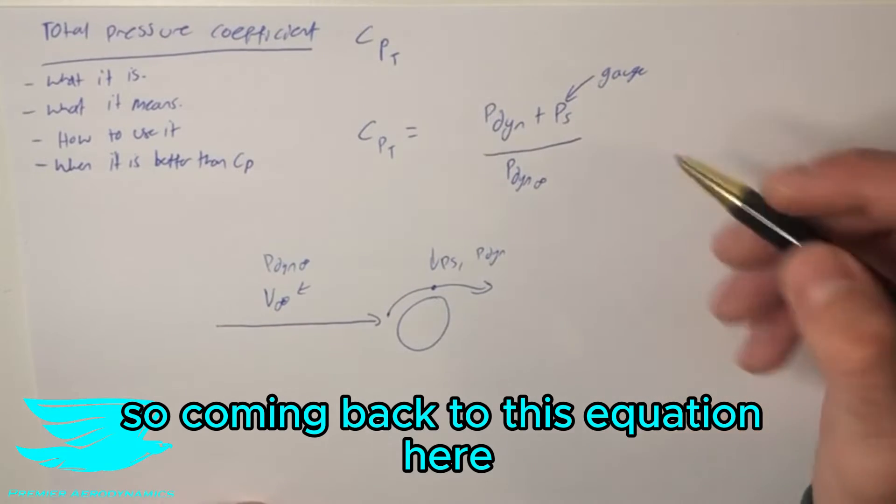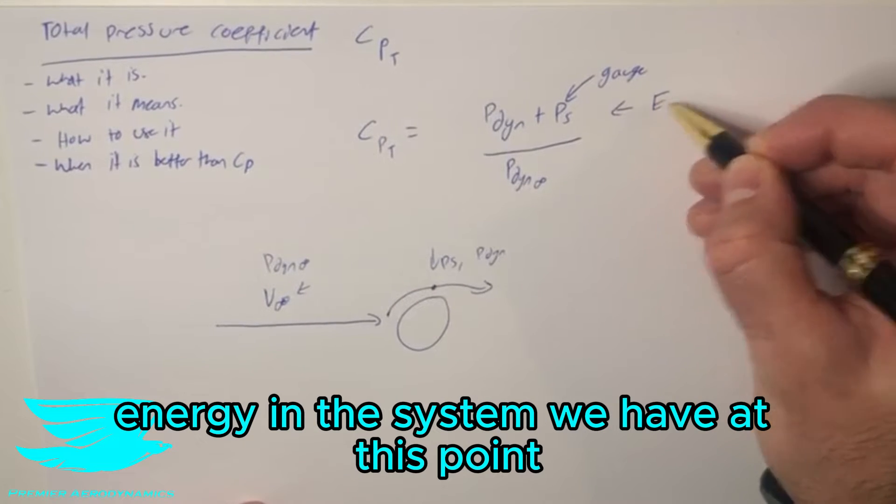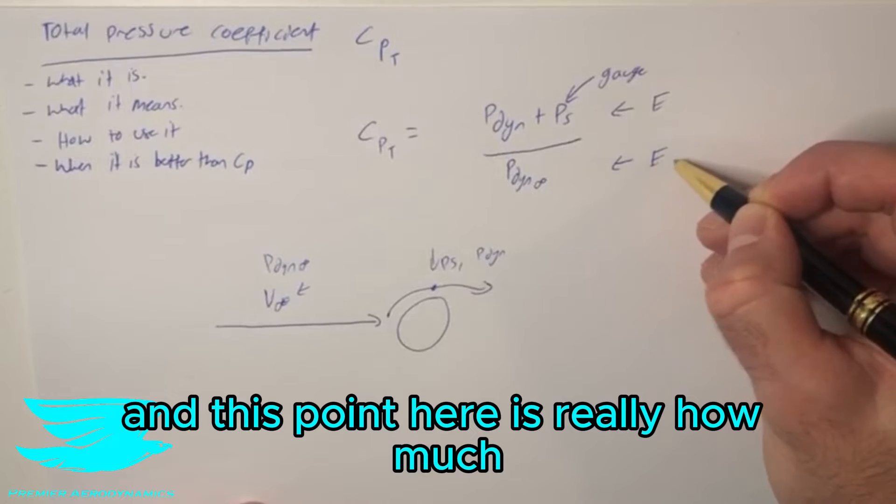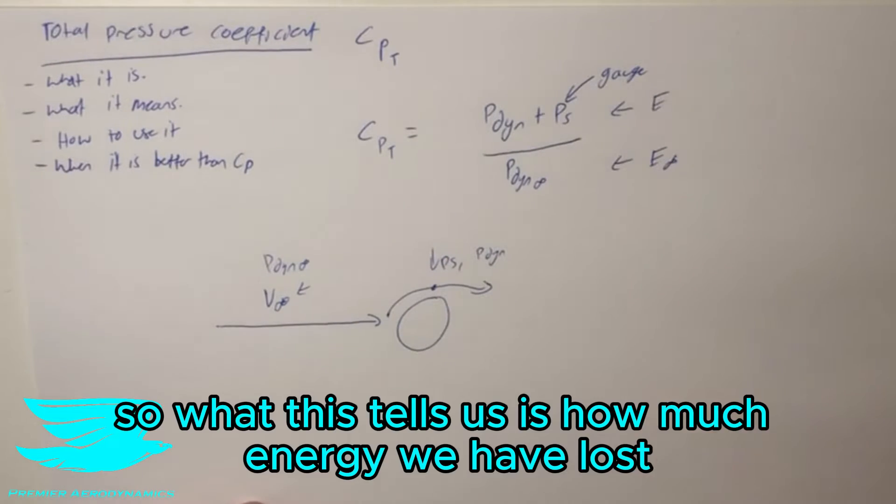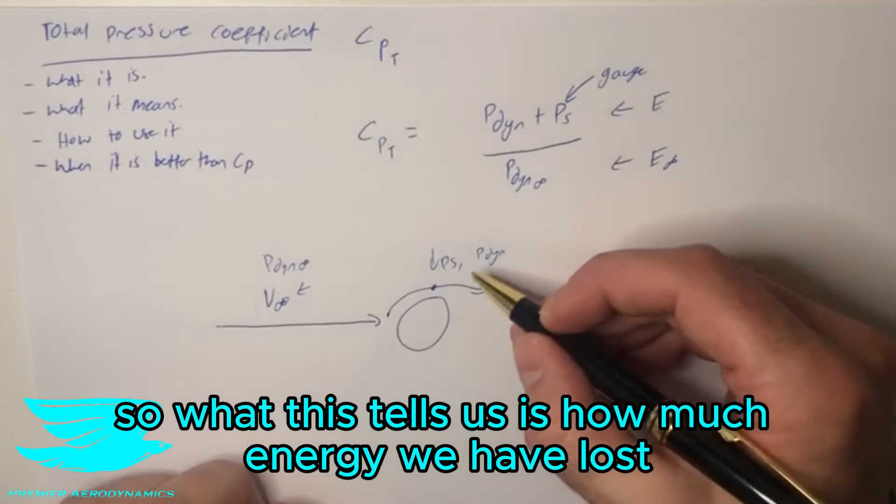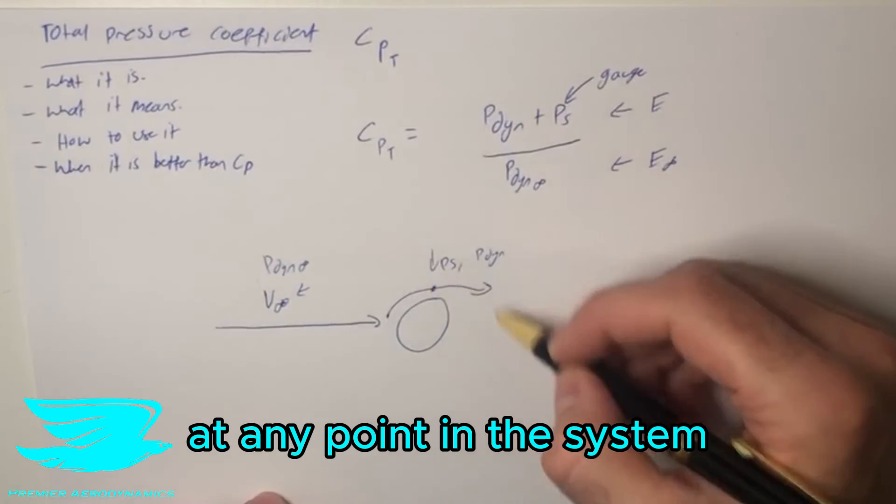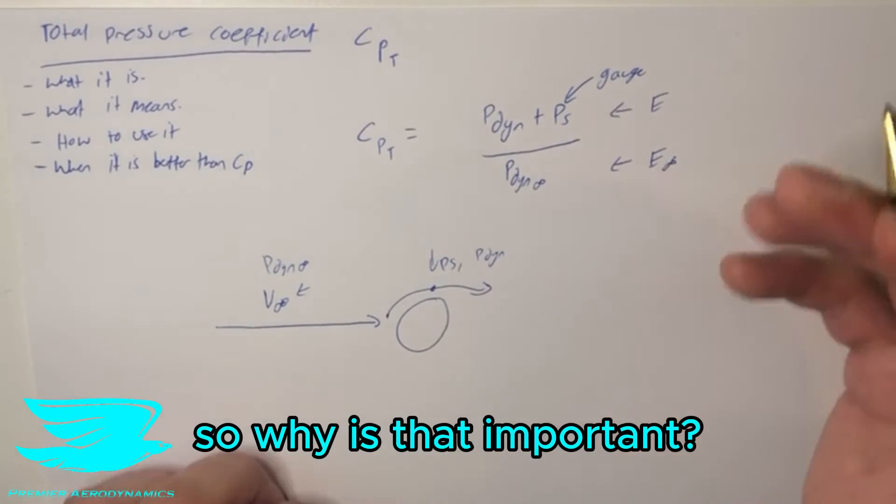So coming back to this equation here, what we have effectively on the top line is how much energy in the system we have at this point and this point here is really how much energy we have in the free stream region. So what this tells us is how much energy we have lost at any point or potentially gained if we've gained it from elsewhere at any point in the system compared to what we started with. So why is that important?